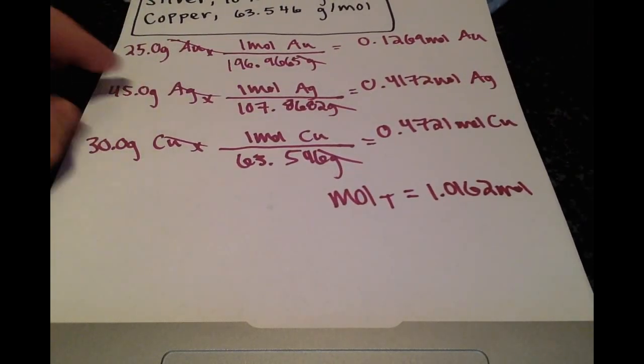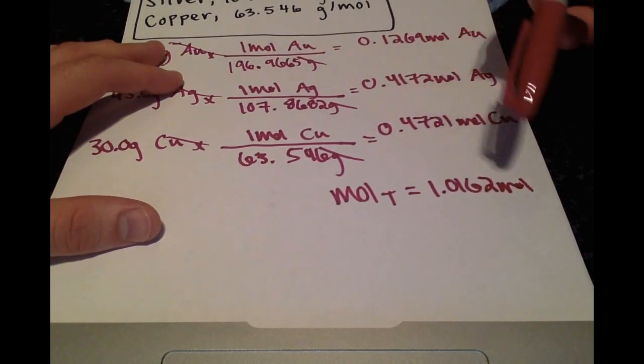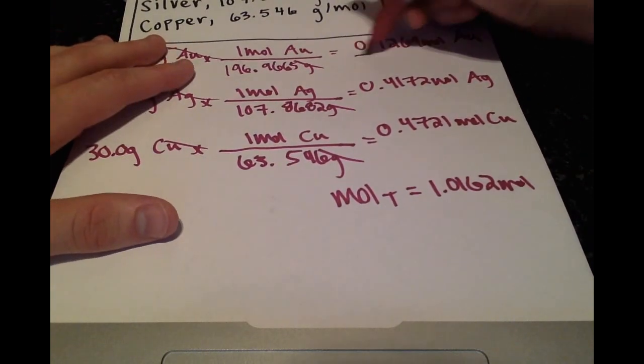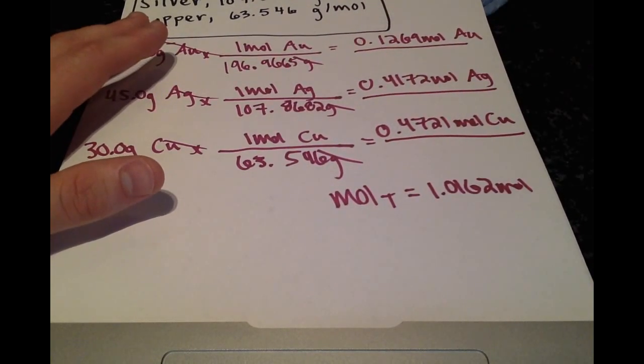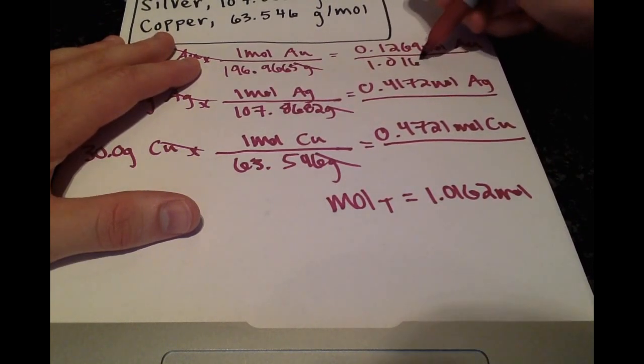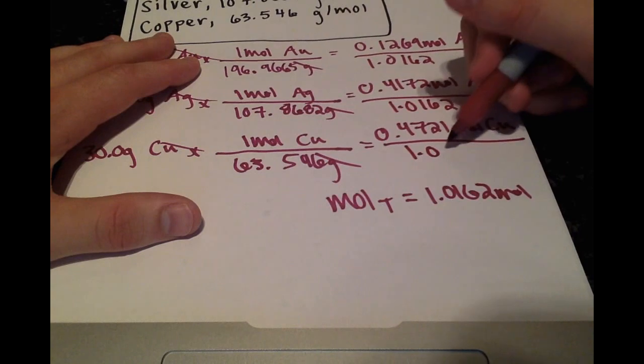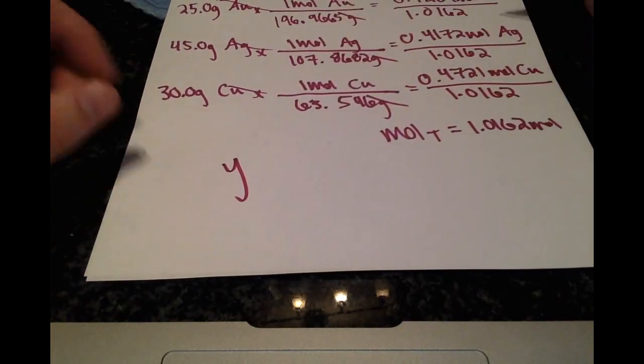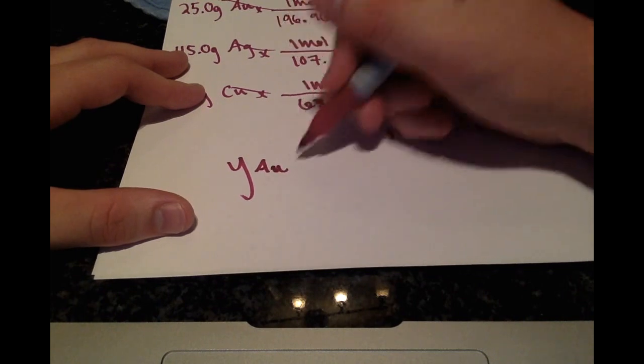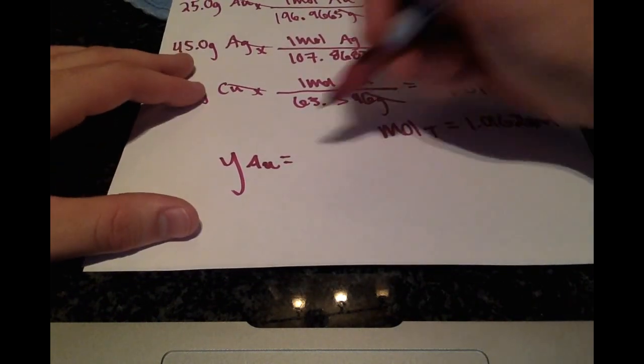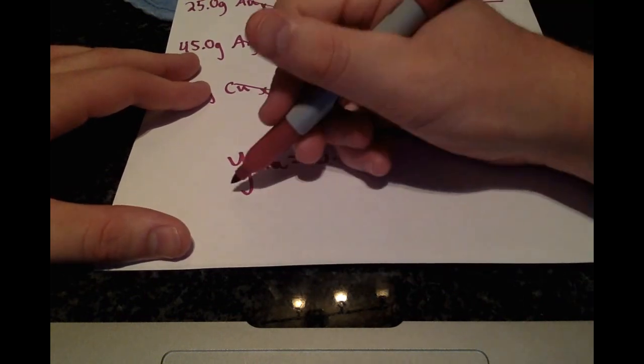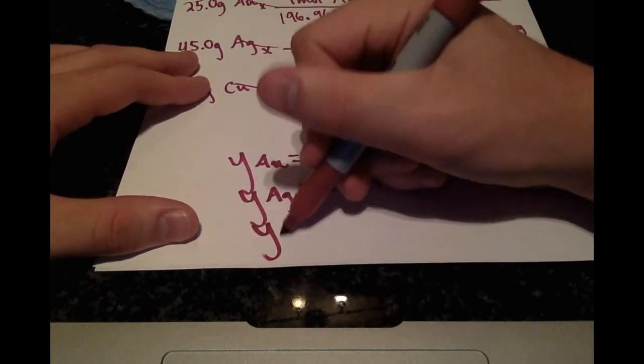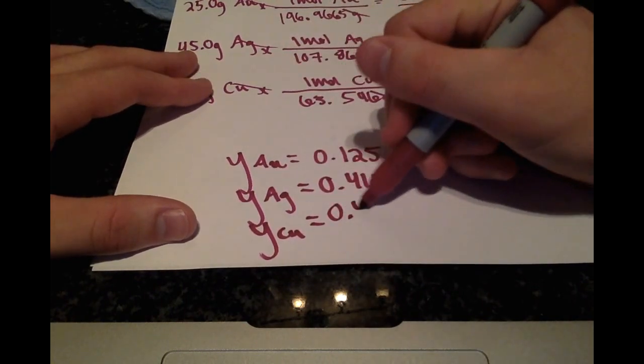All right, so the mole fraction is going to be the moles of each component divided by the total moles. And this works out very well because we have all the components in moles. So now we can divide each molar component by the total moles, 1.0162. And using the abbreviation Y with the element in the subscript, the molar fraction of gold is 0.125, the molar fraction for silver is 0.411, and lastly for copper, it's 0.465.